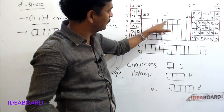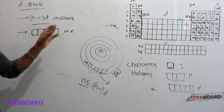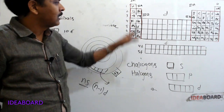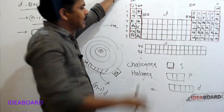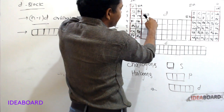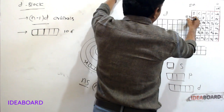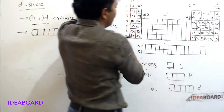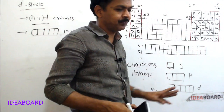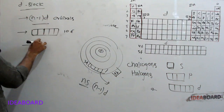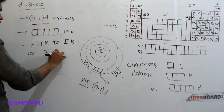D block contains 10 groups, from group 3B to group 2B, or according to IUPAC, groups 3 to 12. The general valence orbit electronic configuration of D block elements is (n-1)d1-10, ns0-2. For some elements there are anomalous configurations where the ns may have 0 or 1 electron instead of 2.